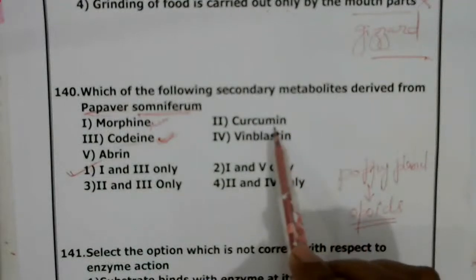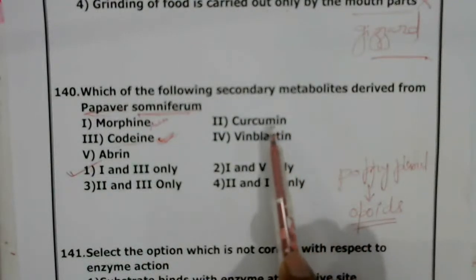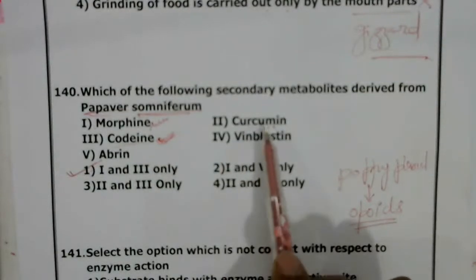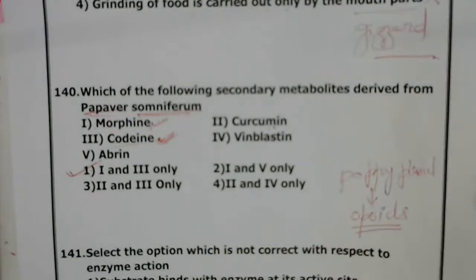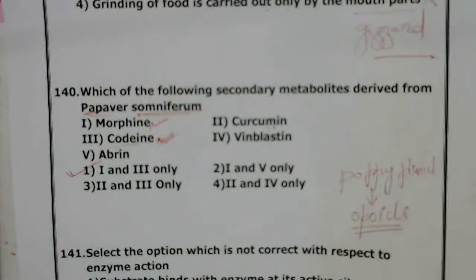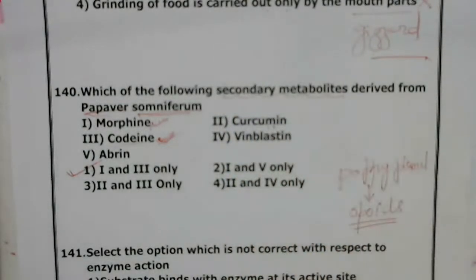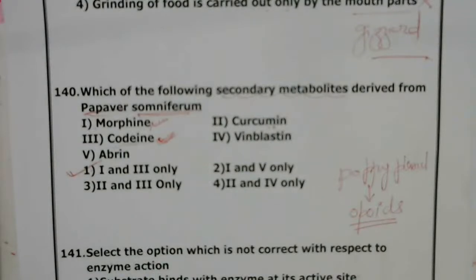Curcumin is present in turmeric, whereas vinblastine is an anti-cancer agent and curcumin is an anti-inflammatory agent. These are medicinal secondary metabolites. Secondary metabolites are substances produced by the plant — they may not have a primary role in the plant, but for humans they are very important and essential.